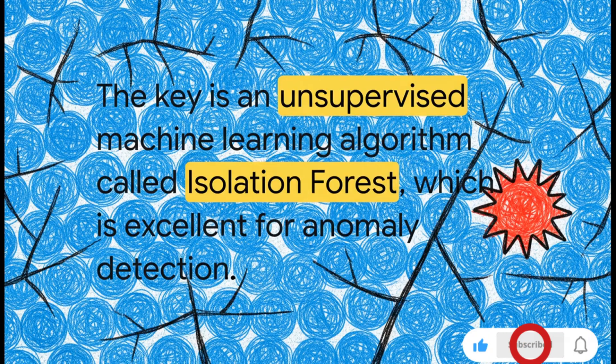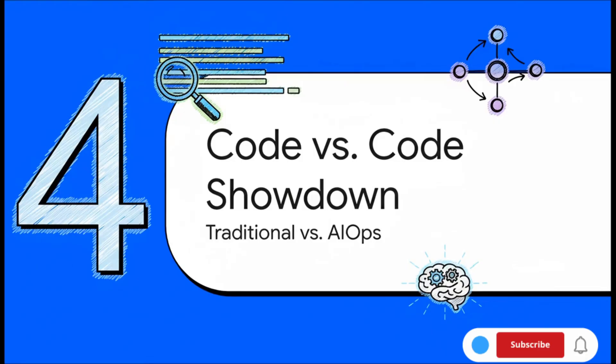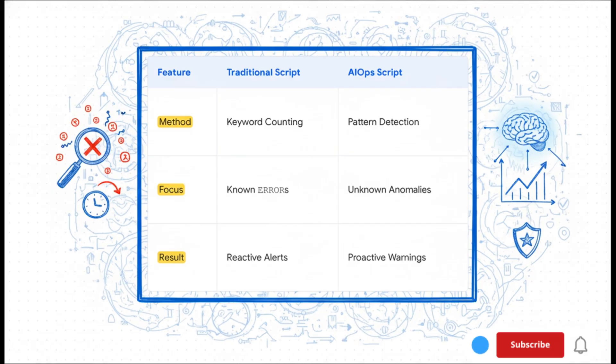All right, enough talk. Let's actually put this to the test. We're going to run a little showdown: two different Python scripts against that same 1,000-line log file. Script number one uses that classic old-school count-the-errors logic, and script number two, that one's using our AIOps approach with Isolation Forest. Let's see who wins. So let's break down what happened. The traditional script, well, it did its job. It found a bunch of error logs, which, you know, is useful, but it's also exactly what we expected it to find.